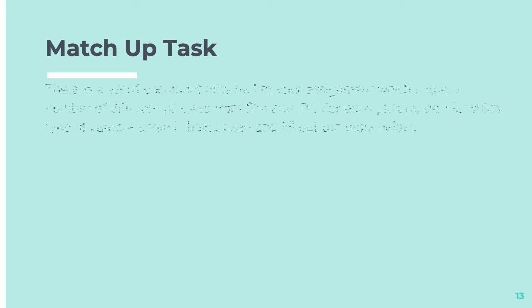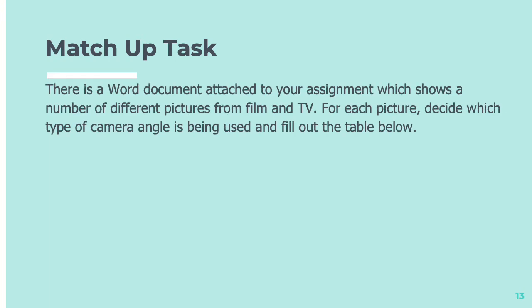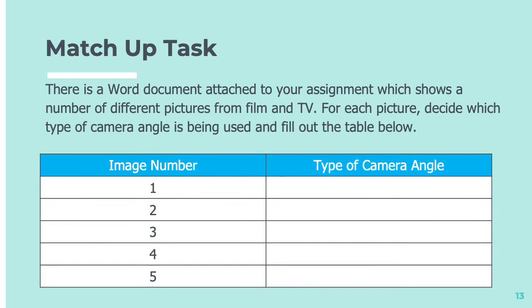And now we're going to do a quick match-up task. There's a Word document attached to your assignment which shows a number of different pictures from film and TV. I think there are five. For each picture, I'd like you to decide which type of camera angle is being used and then fill out the table below. You can look at the images one to five and then write in what kind of camera angle you think is being used. So stop the video and do that now.